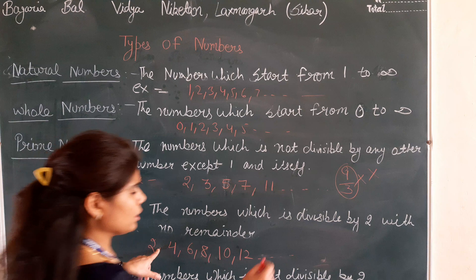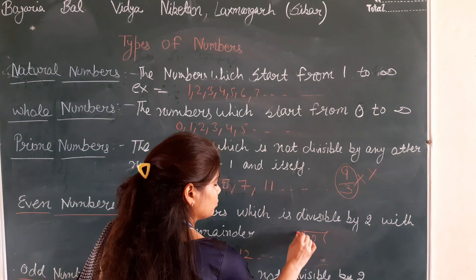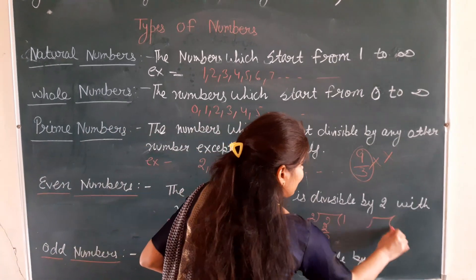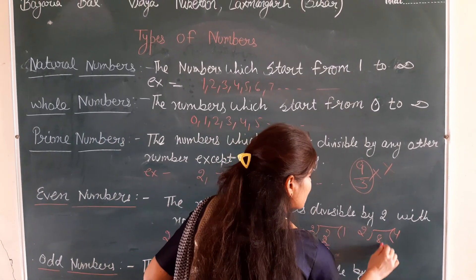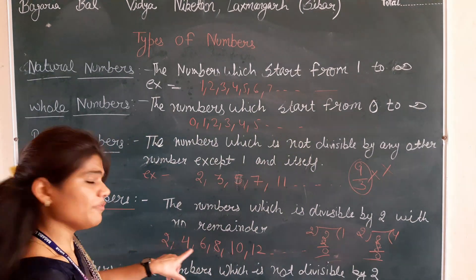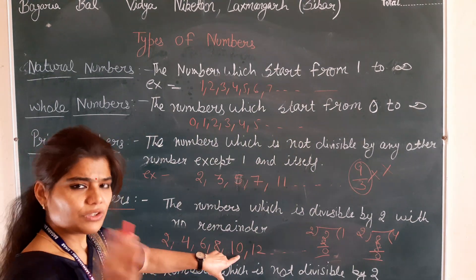If we divide 2 by 2, the answer is 1 and remainder is 0. If I divide 8 by 2, 2 goes 4 times and the remainder is 0. So the number is divided by 2 with no remainder.